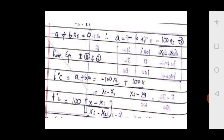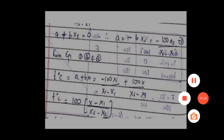Substituting the values of a and b into t = a + bx, we get t equals minus 100·xi divided by (xs minus xi) plus 100·x divided by (xs minus xi). Taking 100 and (xs minus xi) common, the final formula is: t in degrees centigrade equals 100 times (x minus xi) divided by (xs minus xi). This relationship will be used to find unknown temperatures.